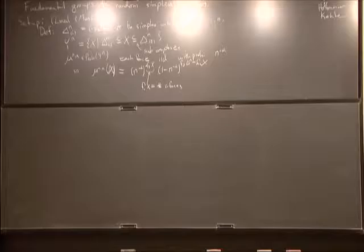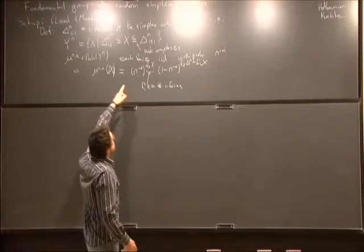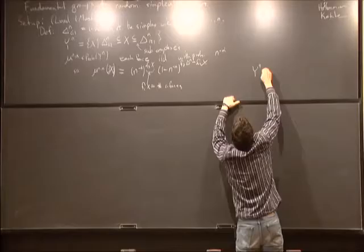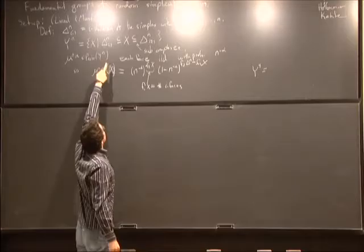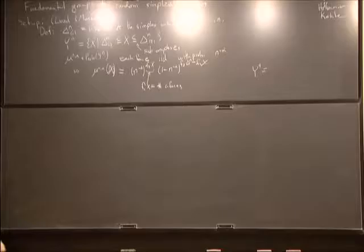So that's my model for random space, and now I'm going to consider this one model. To clarify the notation: Δ_{N,1} is contained in X, and X is contained in Δ_{N,2}. So we've got all the edges, and we put in some of the triangles. That's what I mean — no further demand for Y_N.